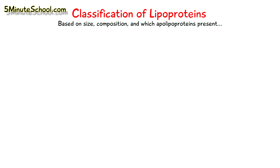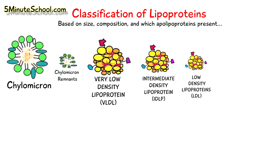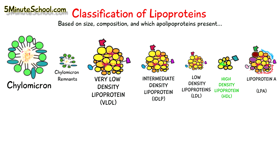We have chylomicrons, chylomicron remnants, very low-density lipoproteins, intermediate-density lipoproteins, low-density lipoproteins, high-density lipoproteins, and lipoprotein A. These six — all except HDL — are considered to be pro-atherogenic.